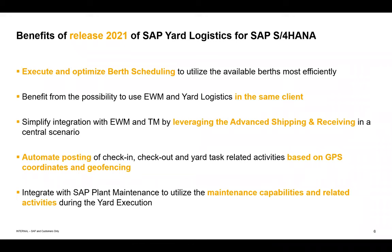The third highlight is Advanced Shipping and Receiving — a new integration scenario for EWM and TM. This means EWM and TM can be integrated without any additional effort or interface configuration. All updates from EWM run directly on the freight order in TM. This is supported in the central scenario, and yard logistics now supports this too, enabling automatic and immediate updates on the freight order without setting up separate interfaces.